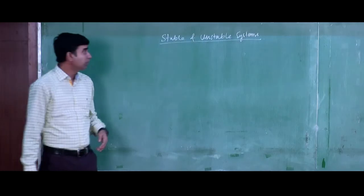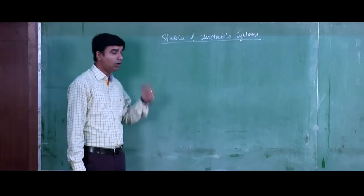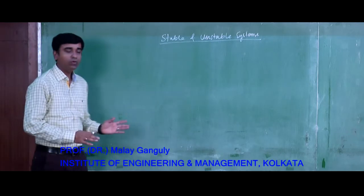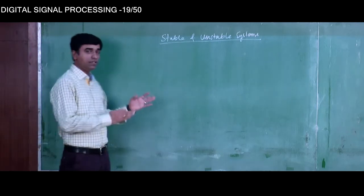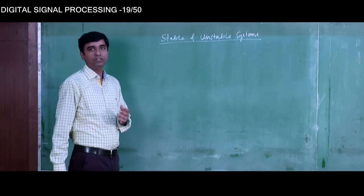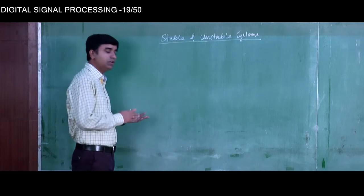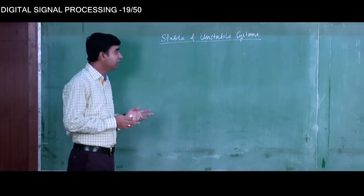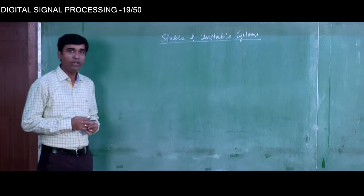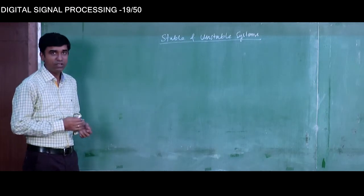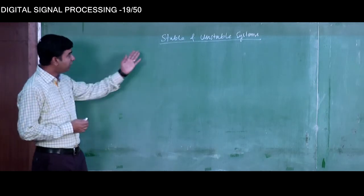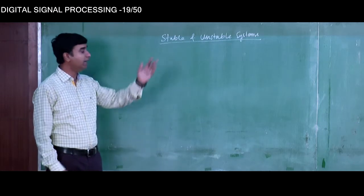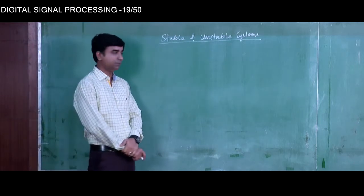In this lecture, we will be discussing stable and unstable systems. By now we have discussed other types of systems like causal, non-causal, static, dynamic, linear, non-linear, and time-invariant and time-variant systems. Finally, this is the last type of system — stable and unstable systems.